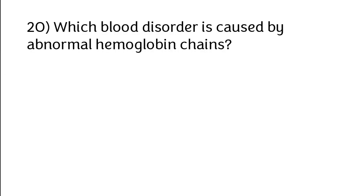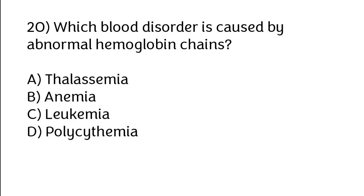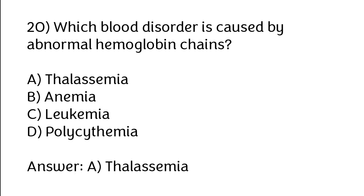Which blood disorder is caused by abnormal hemoglobin chains? Options: Thalassemia, anemia, leukemia, polycythemia. The correct answer is Option A: Thalassemia.